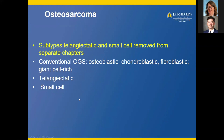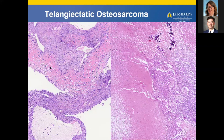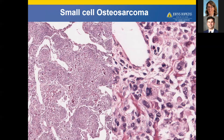Regarding osteosarcoma, subtypes of telangiectatic and small cell that had their own chapters in the fourth edition are now removed and added to the general osteosarcoma chapter, which includes osteoblastic, chondroblastic, fibroblastic, giant cell-rich, telangiectatic, and small cell variants. Telangiectatic osteosarcoma is a malignant bone-forming tumor with large fibrous septae, abundant blood and hemorrhage — can mimic an aneurysmal bone cyst but forms bone. Small cell osteosarcoma has very primitive small cells that produce immature bone.